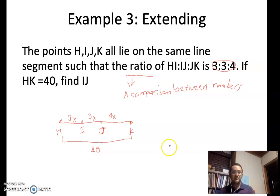What we did here is we turned this into a segment addition type of problem. Now instead of adding two line segments together, I have HI plus IJ plus JK. I'm adding three line segments together and that equals HK.